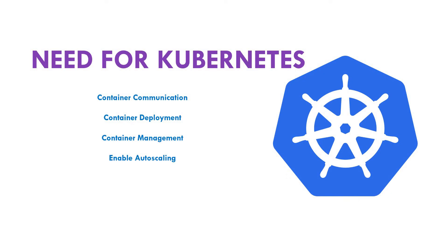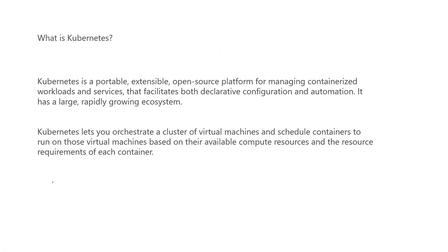As we saw in the example, we need to manage multiple containers. For the below activities we need Kubernetes: container communication, container deployment, container management, and to enable auto scaling. The definition of Kubernetes is: it is a portable, extensible, open source platform for managing containerized workloads and services that facilitates both declarative configuration and automation. It has a large, rapidly growing ecosystem. Kubernetes lets you orchestrate a cluster of virtual machines and schedule containers to run on those virtual machines based on available compute resources and the resource requirements of each container.